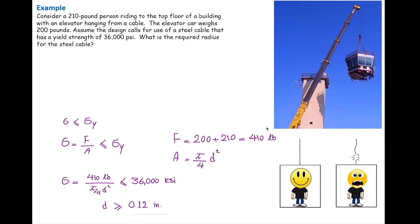These examples show that when we design something, we need to be aware of uncertainties. The weight of the person — I said it's 210 pounds, but what if that person weighed 211 pounds? Or what if the yield stress of the material is a bit smaller than assumed? In all those cases, this element is going to break if you are using that diameter. So we need to stay away from that boundary with a safety margin.